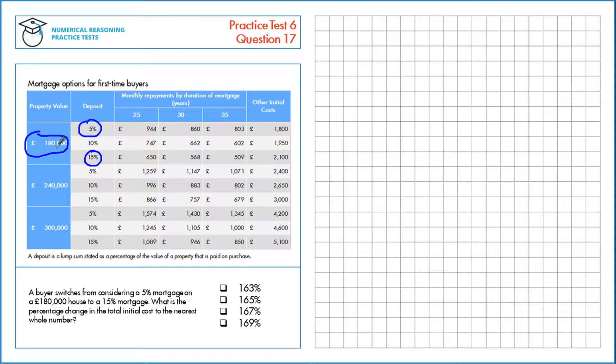So first let's calculate the initial cost for a 5% deposit. So 5% is 0.05, and that's of the total property value here, so that's 180,000. We need to look if there's any other initial costs, and across here we see there's 1,800. We need to add that on also. That gives us a total of £10,800.